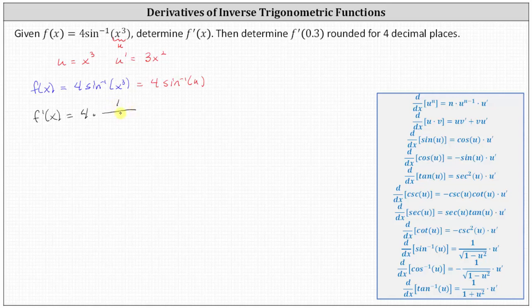This is equal to one divided by the square root of the quantity one minus u squared, where u is x cubed, giving us one minus the square of x cubed, and then times u prime, where u prime is three x squared.